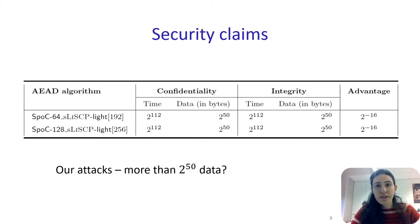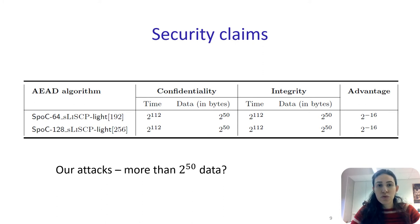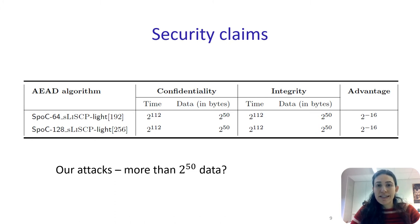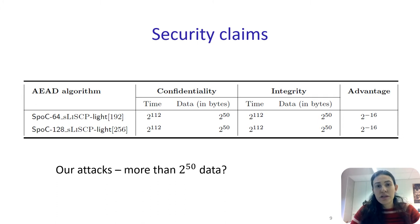This table summarizes the security claims of the authors. As we interpreted them, the best attack on either version of SPOC should use at most 2 to the 50 data encrypted under the same key and has a time complexity of at most 2 to the 112. Furthermore, the attack aiming at either breaking the confidentiality or the integrity of the cipher should have a success probability of at least 2 to the minus 16. At first sight, it seems that all our attacks have complexity more than 2 to the 50 data. However, our attacks use different keys and therefore the restrictions are satisfied.